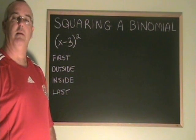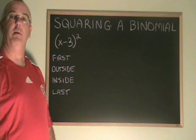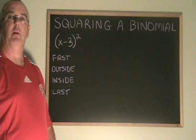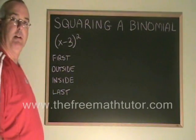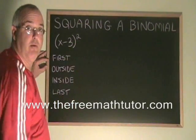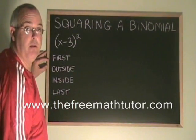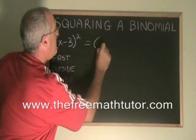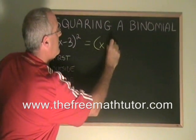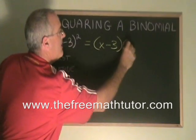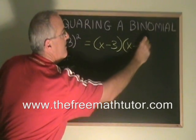When we are asked to square a binomial, we are just being asked to multiply that binomial by itself. Our example is x minus 3 squared. This is the same as x minus 3 times another x minus 3.